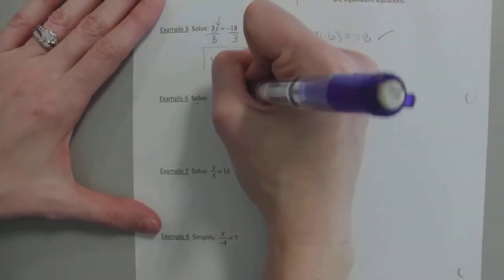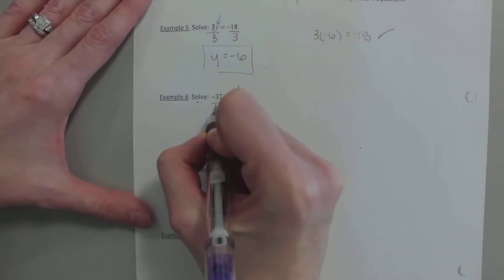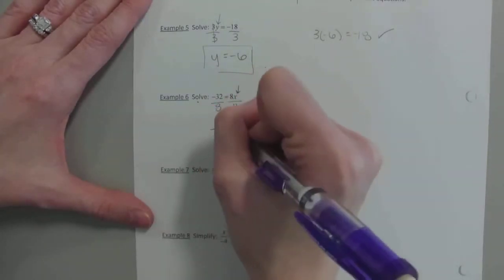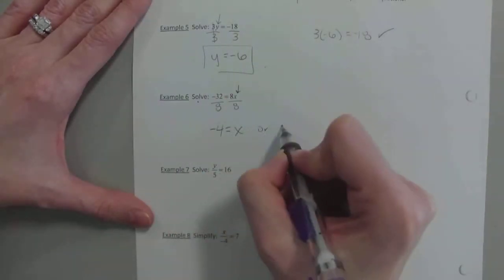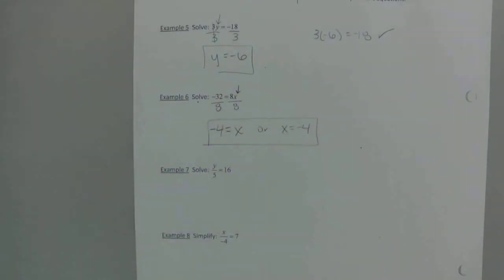This is basically the same idea. It's just kind of flopping where things are. If you wanted to get x by itself, what do we need to do to both sides? Multiply by 5. Perfect. So we're going to have, what is that, negative 4 equals x? Or x equals negative 4?